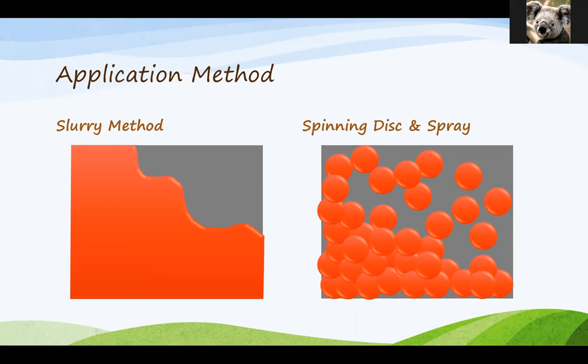The other application method is the spinning disc. In that process the polymer itself is atomized into small droplets and they hit the seed surface. Increasingly those hits cover more of the surface and begin to overlap and then they start to join together and in that way they give you that complete coating layer around the seed.